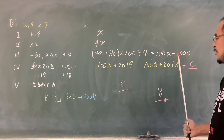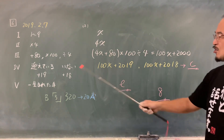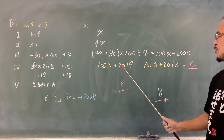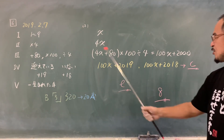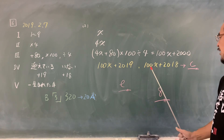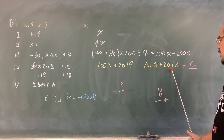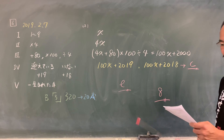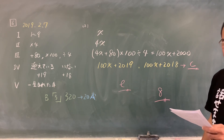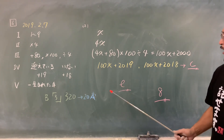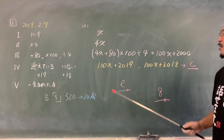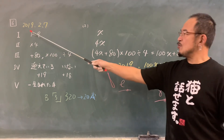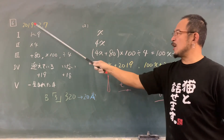100X+2000。誕生日を迎えていれば19を足して100X+2019、迎えていなければ18を足して100X+2018。ということで、まずは最初の選択肢がCということになります。この2019というのは今年の誕生日を迎えている。何回目の誕生日かというのは今年から生まれ年引けば出ます。迎えていなければ2018年の誕生日は来ているということで、そこから生まれた年を引けば年齢が出ます。